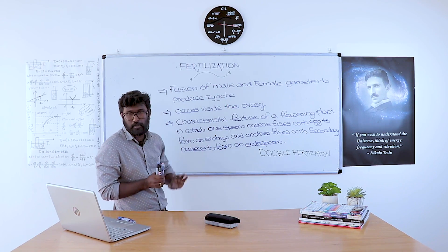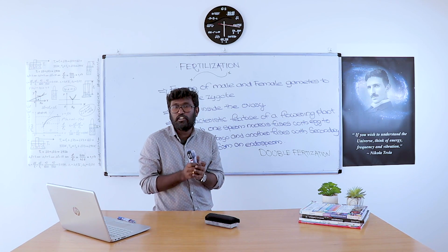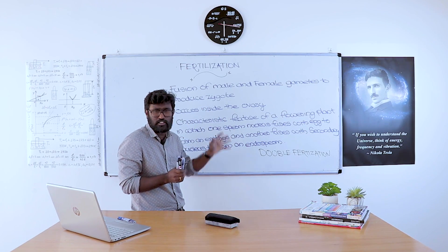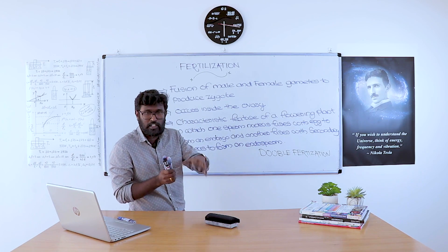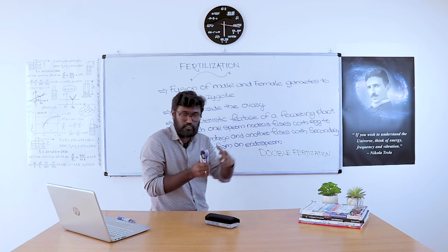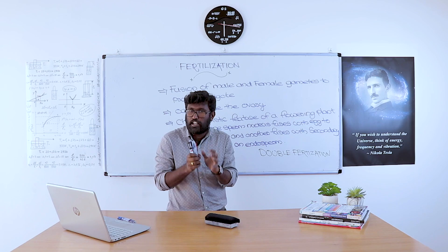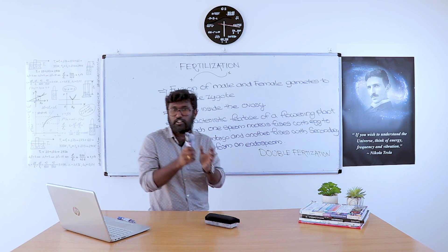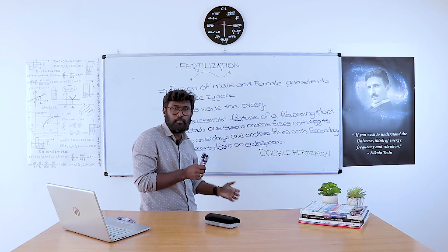The fusion of male and female gametes to produce a zygote is called fertilization, and it occurs inside the ovary. Double fertilization is the characteristic feature of a flowering plant in which one sperm cell combines with an egg to produce an embryo and the second one combines with the secondary nucleus to produce an endosperm. This is called double fertilization.